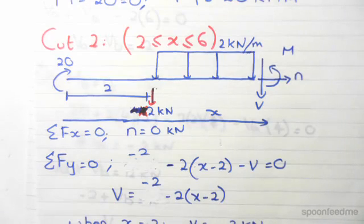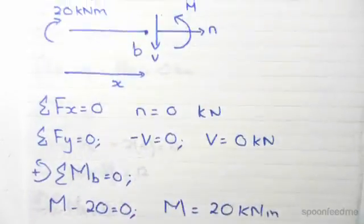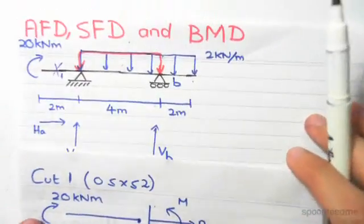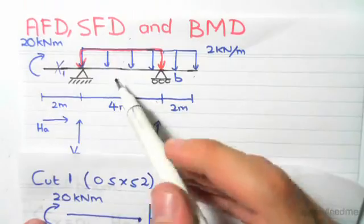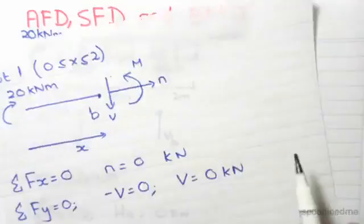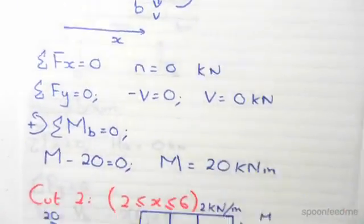So continuing on this example, we're now up to the second cut. Just observing the first diagram that we drew for this question back quickly. This was our question originally and now we're up to the second cut which goes between the pin and the roller. Just drawing it in quickly, my second cut is here as you can see.